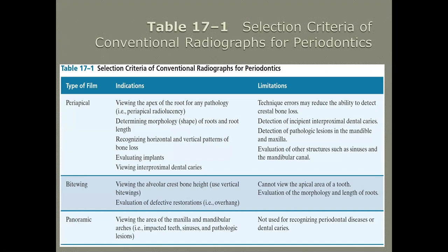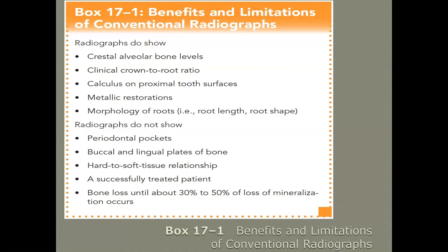Table 17-1 in your textbook gives you everything you need to know about the difference between a periapical, a bite wing, and a panoramic image — what they're used for and what they're not used for. Bite wings can also be taken anteriorly. For offices using a full-mouth series with a panoramic x-ray and four vertical bite wings, sometimes they'll also take an anterior periapical, but an anterior bite wing is more accurate because the central ray comes in directly.